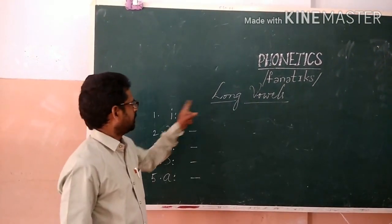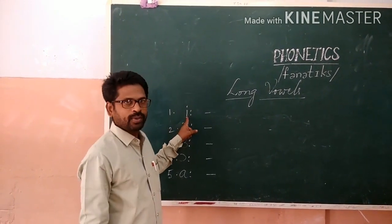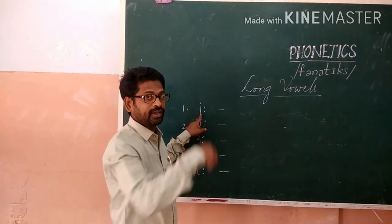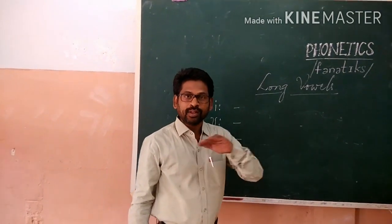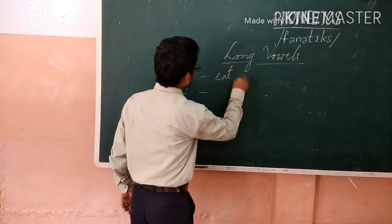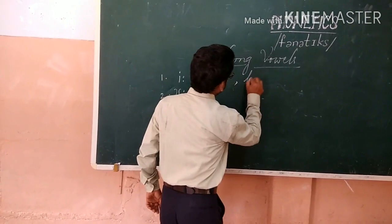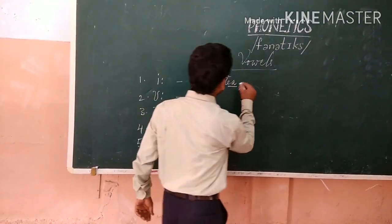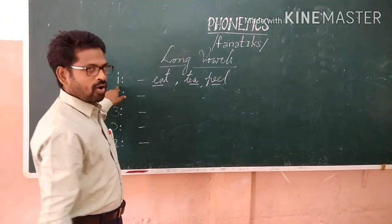Now turning to long vowels. The first long vowel is the longer version of the short vowel I. The sound is 'ee.' Examples: E-A-T — eat; T-E-A-T — teat; P-E-E-L — peel.